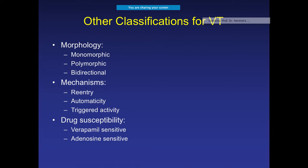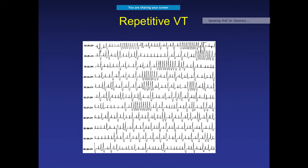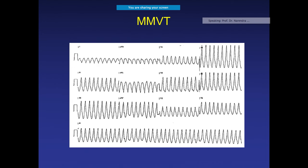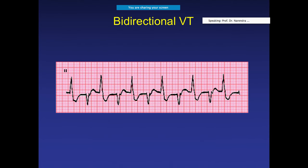VT can present as monomorphic, polymorphic, or bidirectional. It can also be repetitive, occurring again and again. In monomorphic VT, there is only a single QRS morphology. In bidirectional VT, the axis keeps changing — for example in lead II, one beat is positive and the next is negative. The mechanism can be re-entry, automaticity, or triggered activity.